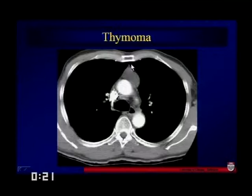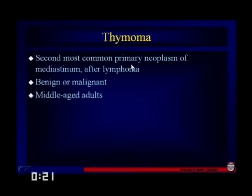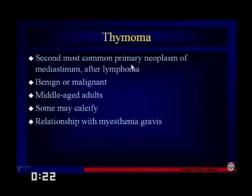Thymoma is the second most common neoplasm after lymphoma. It can be benign or malignant, usually judged by how invasive it is in terms of adjacent structures. Usually seen in middle-aged adults, it may calcify. The relationship with myasthenia is such that some patients with myasthenia may have a thymoma and benefit from resection. Some may not clearly have a thymoma and still benefit from resection of the thymus. Not all patients with a thymoma will have myasthenia, however.